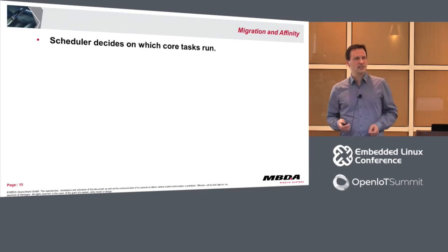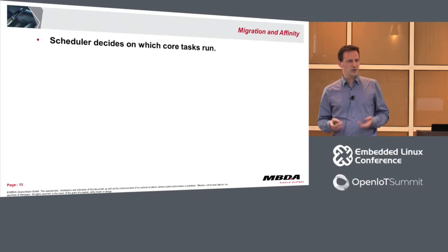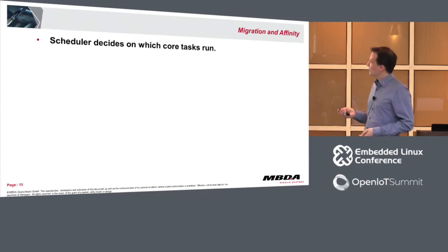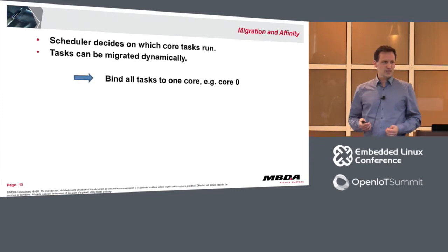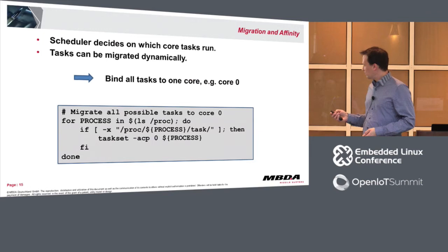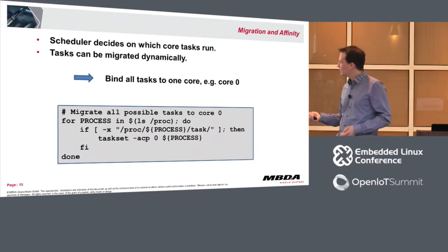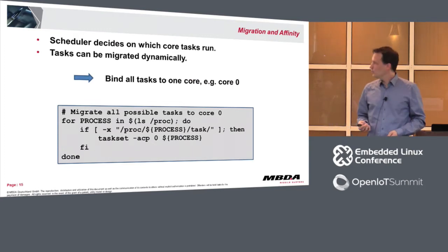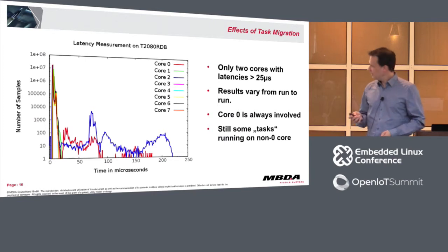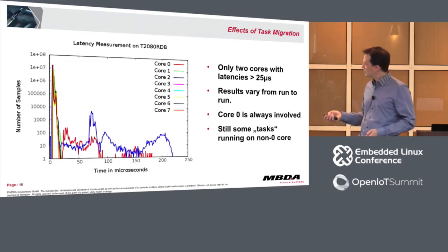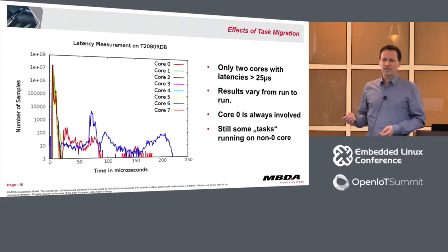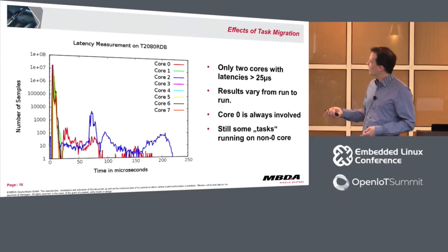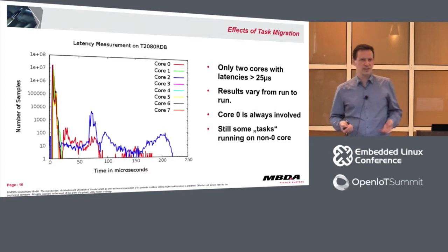We configured the system to let the Linux kernel handle all cores. The scheduler decides on which cores tasks run, and tasks can be migrated dynamically. The idea: bind all tasks to one core — for example core zero. This can be done with a simple bash script that loops over the entries in /proc and uses the taskset command to assign processes to core zero. When you do so, you see two cores instead of four with entries in the higher latency region. You always see core zero — the red one — but the second core changes: sometimes core two, sometimes cores four through seven.